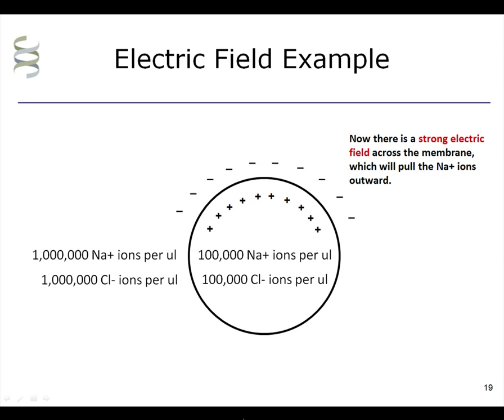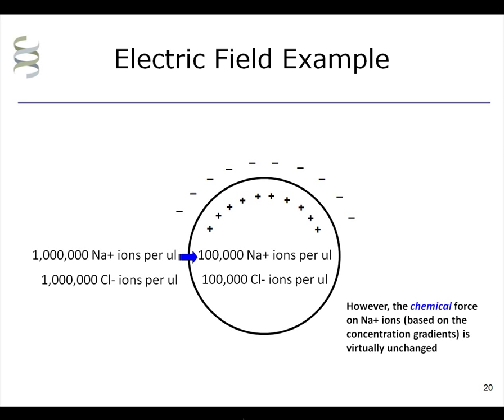Now, there is a strong electric field across the membrane, which will push the sodium ions outward. However, the chemical force on sodium ions, based on the concentration gradient, is virtually unchanged. The sodium concentration outside the cell has gone from 1,000,000 sodium ions to 999,990. Likewise, the sodium concentration inside has gone from 100,000 sodium ions to 100,010.